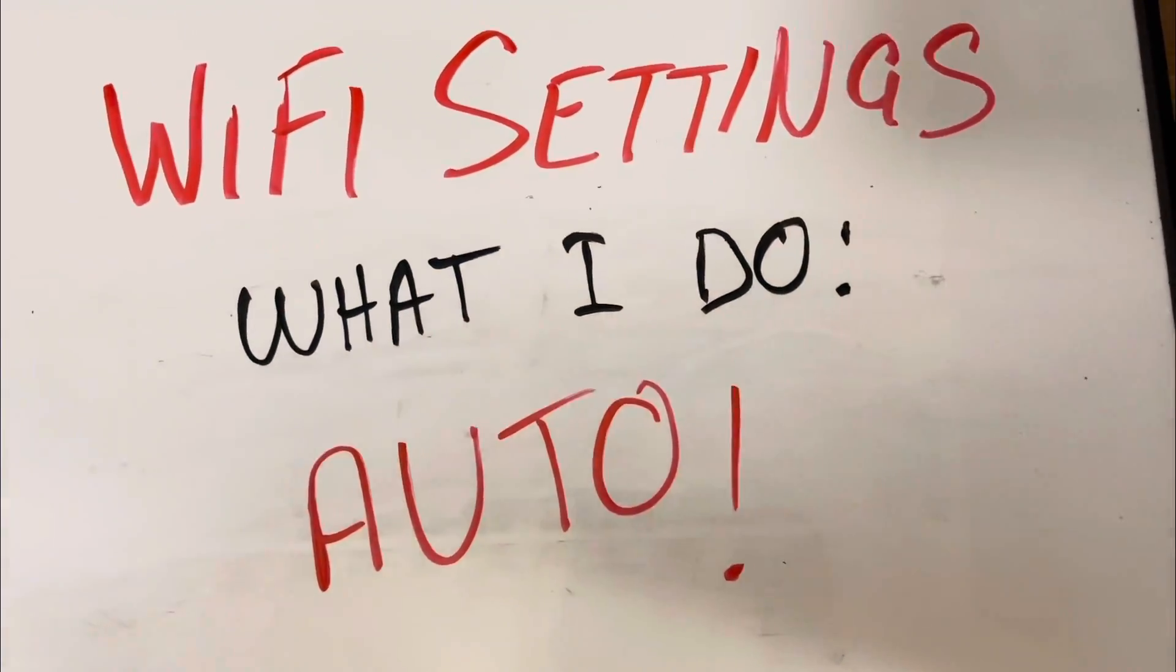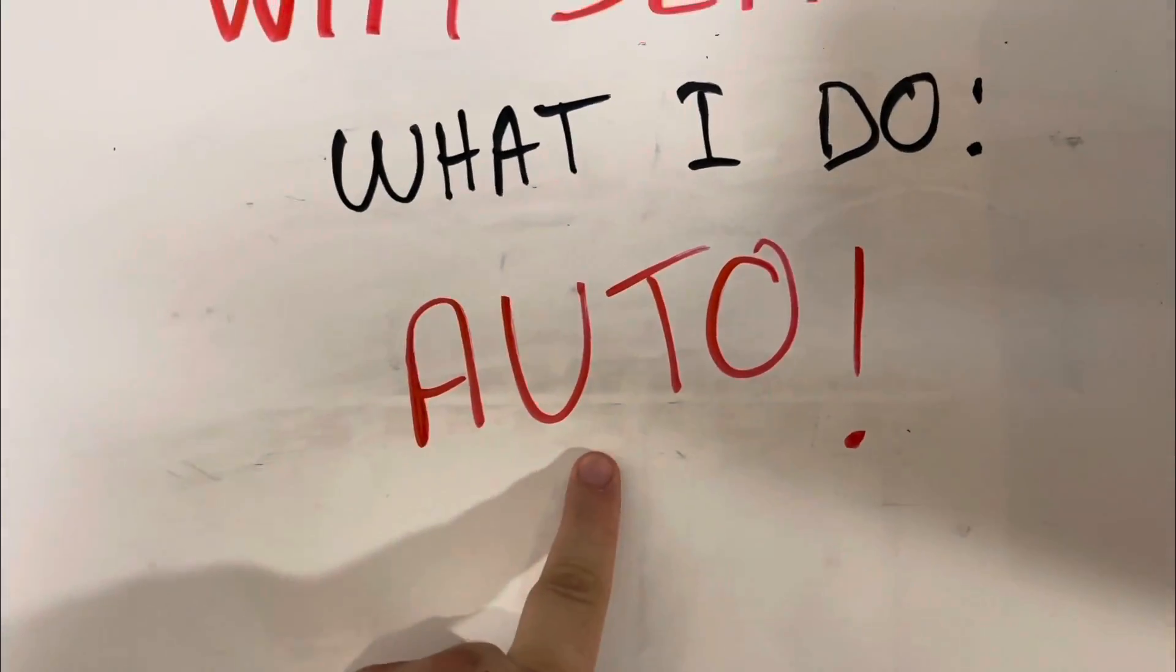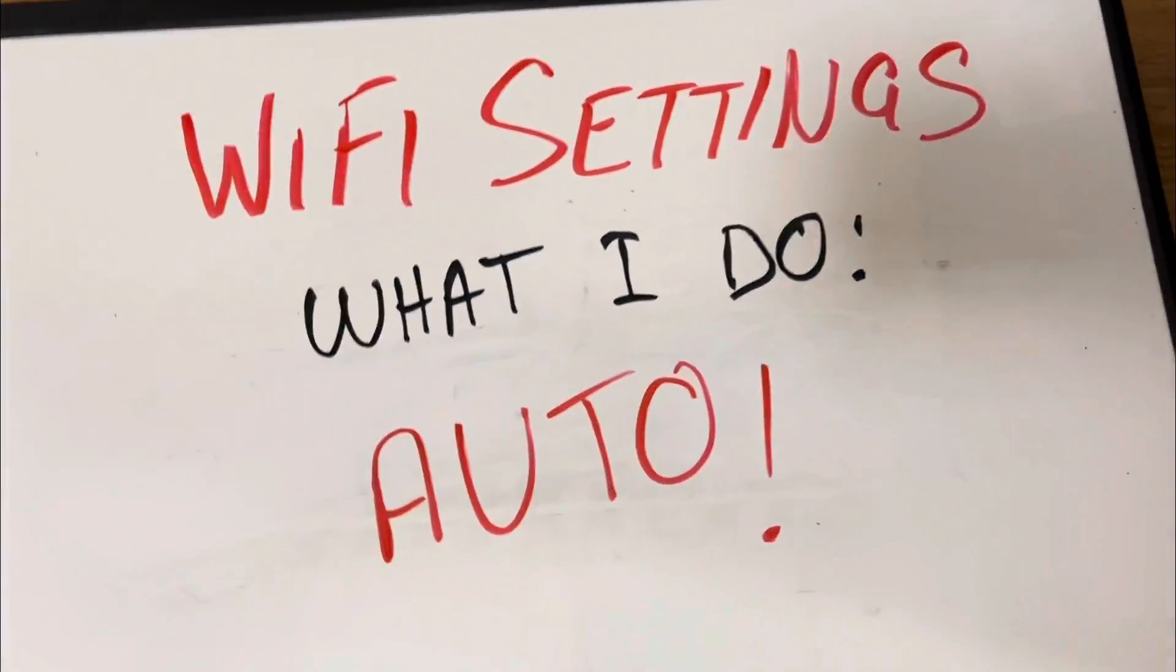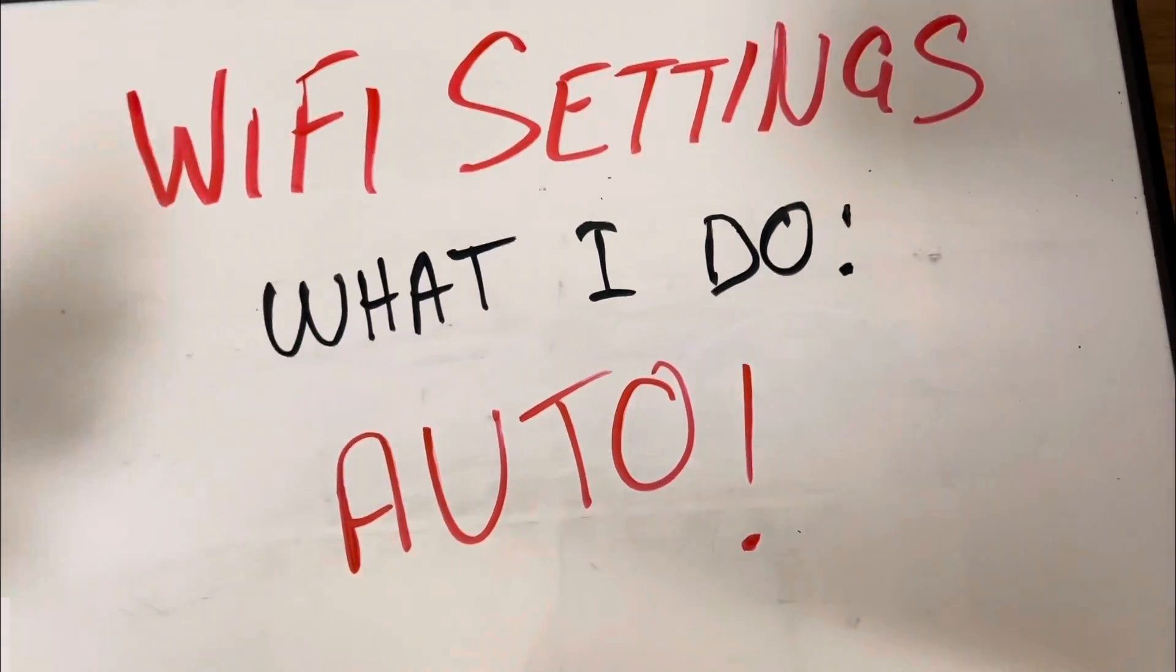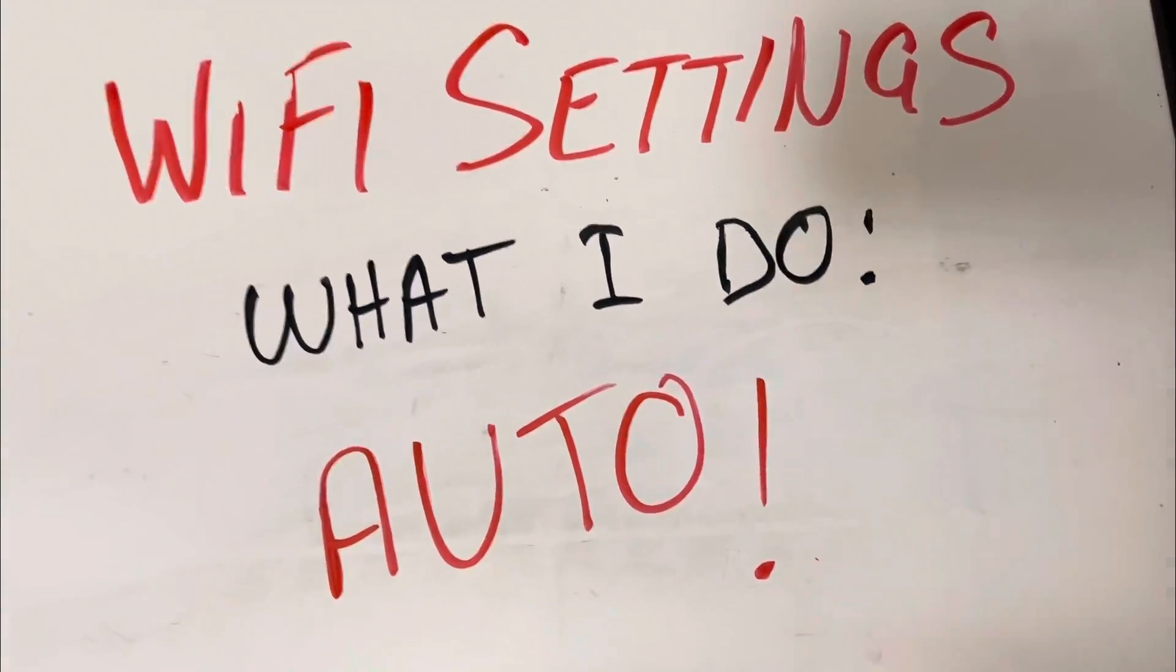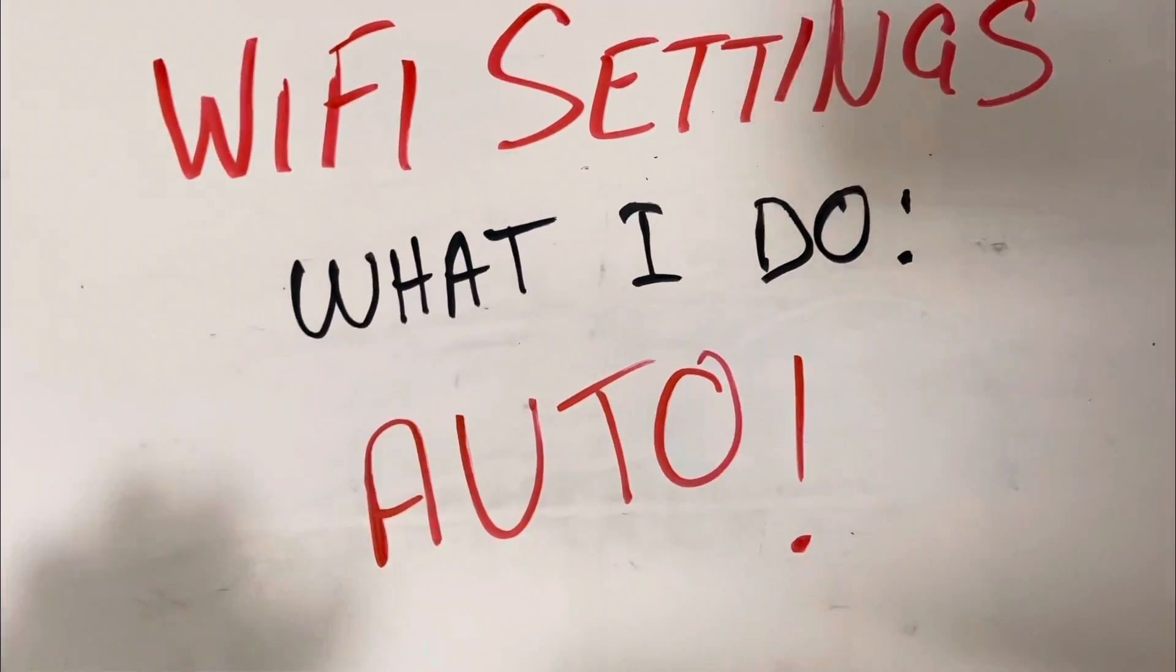On my personal home network router, I use auto because what that does is when you turn your router on, it'll go out and find all the networks and see what channels they're all on and it'll try to find the best option for your router so it doesn't interfere if possible.